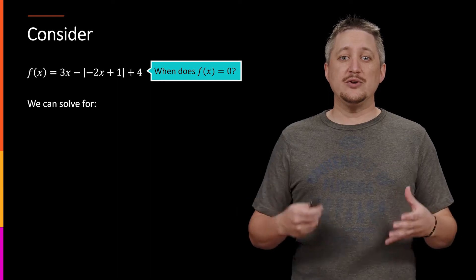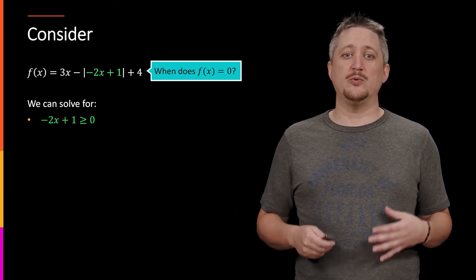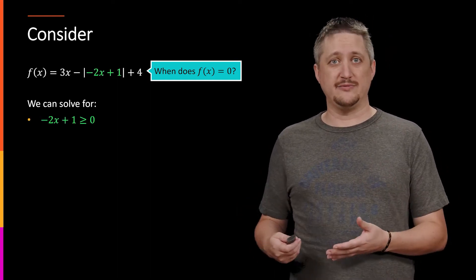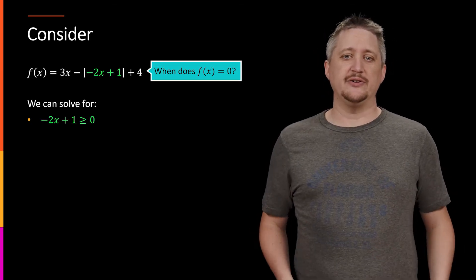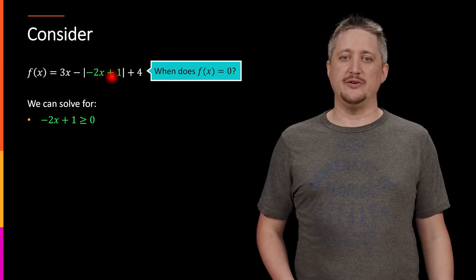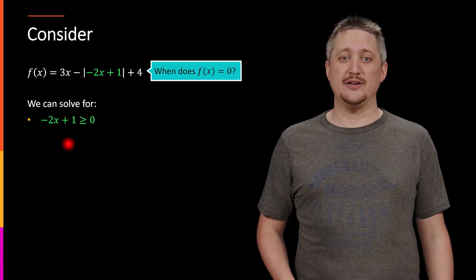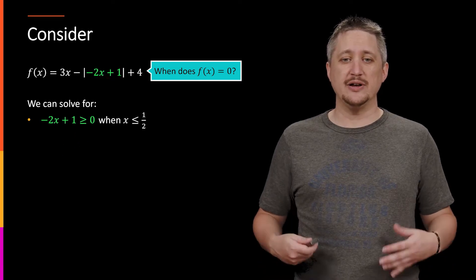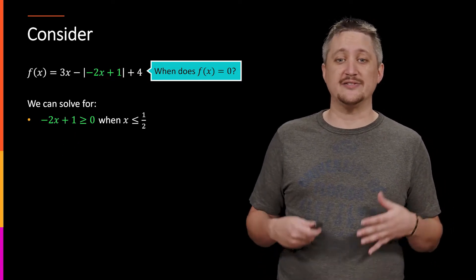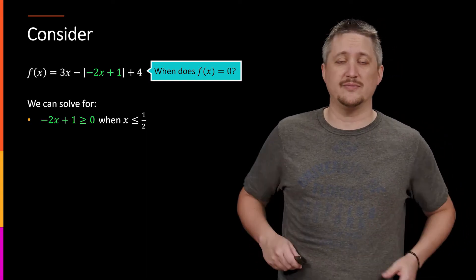So looking at this function then, we want to solve for when is the interior positive or not negative, really. So we take that interior, the -2x + 1, the piece that's inside the absolute value, have that greater than or equal to 0, and solve that. So that's true when x is less than or equal to 1/2.